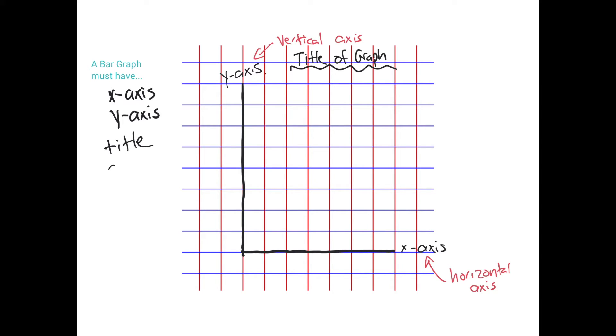It has a scale on the side. So on here we'll pretend that we're skip counting by twos. This varies with every single graph. You will not always skip count by twos.